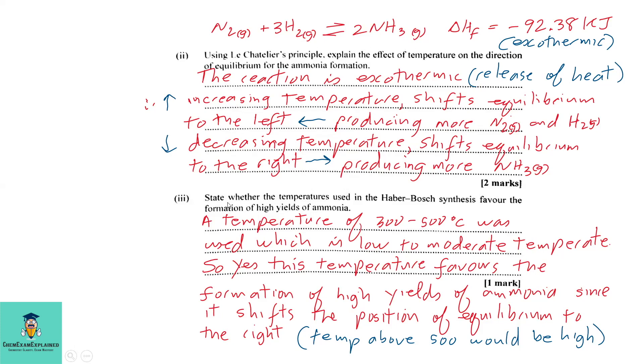Part 3: State whether the temperatures used in the Haber-Bosch synthesis favors the formation of high yields of ammonia. A temperature of 300 to 500 degrees Celsius was used, which is low to moderate temperature. So yes, this temperature favors the formation of high yields of ammonia since it shifts the position of equilibrium to the right. Once you shift the equilibrium to the right, you are producing more ammonia.